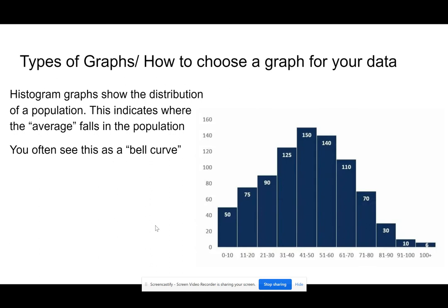And then finally, we have histograms. Histograms are where we take a population and some kind of characteristic, and we break it out into subgroups of that population. So maybe we're looking at height, or age, or something else — we're taking the population, breaking it apart, and looking for where the average might fall.